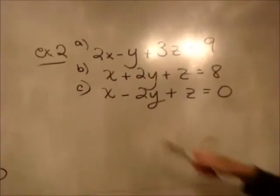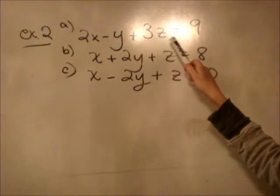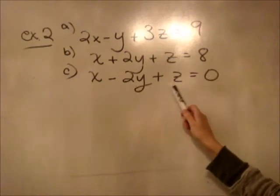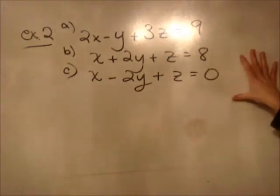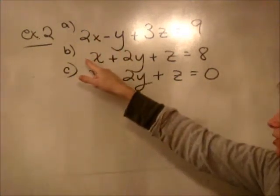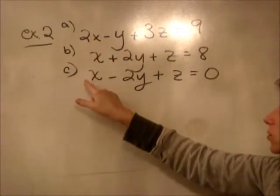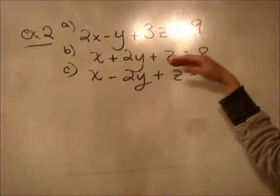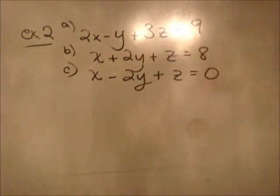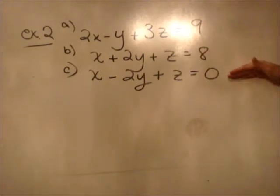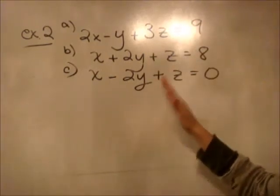Three equations, three unknowns: 2x minus y plus 3z equals 9; x plus 2y plus z equals 8; and x minus 2y plus z equals 0. You can make a choice which variable you want to eliminate — the x's, y's, or z's. Everyone can do this differently and it should still work out. I'm going to eliminate the y's because I can see that adding b and c together without multiplying anything will eliminate the y's. That's the easiest thing to do.